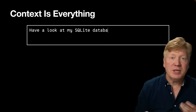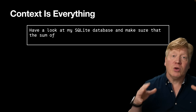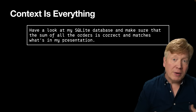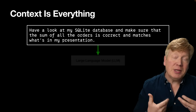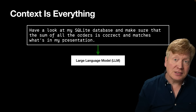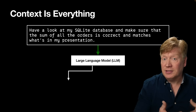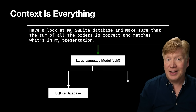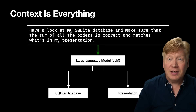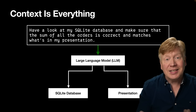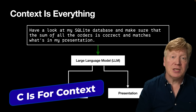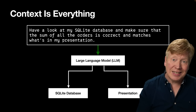Take a query like this one: 'Have a look at my SQLite database and make sure that the sum of all the orders is correct and matches what's in my presentation.' No model by itself is going to be able to do this — it lacks context. It needs to be able to query the database to get the orders and read the presentation file. When it has both of those, it can answer your question. That's where the C in MCP comes from — it stands for context.